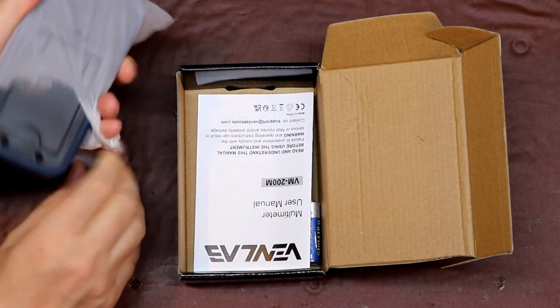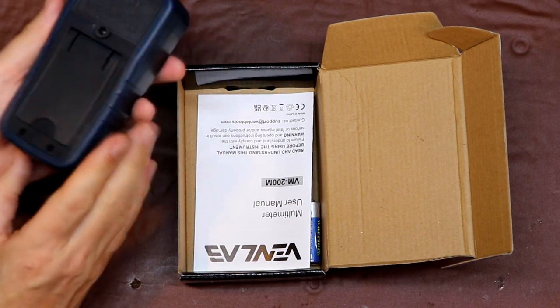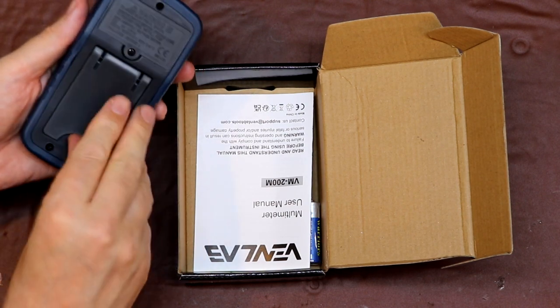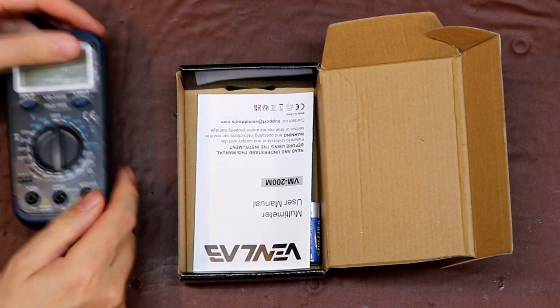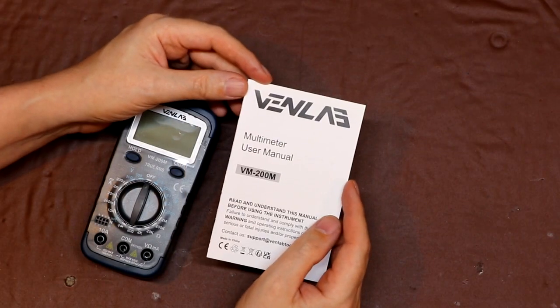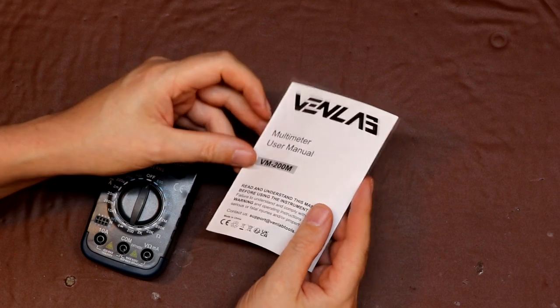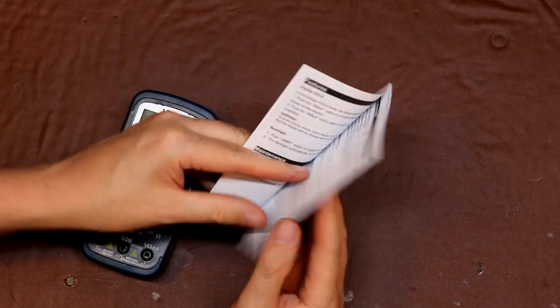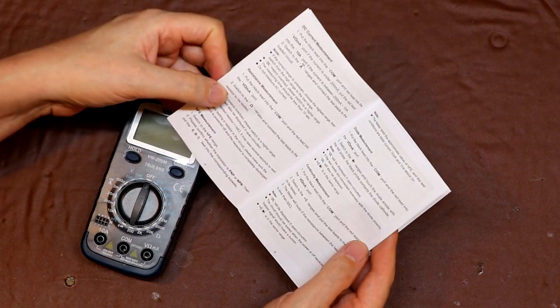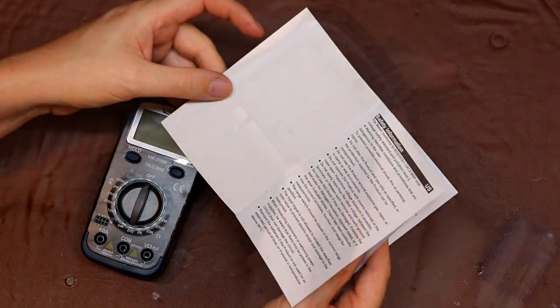Let's rip open the bag. Well the first thing I notice is a little stand. A lot of these small meters don't actually have a stand so that's quite a nice little feature. As you'd expect the meter does come with a manual which is in both English and Chinese. And I have to admit it's actually got a fair amount of detail in it for such a low cost meter. So they haven't scrimped on that.